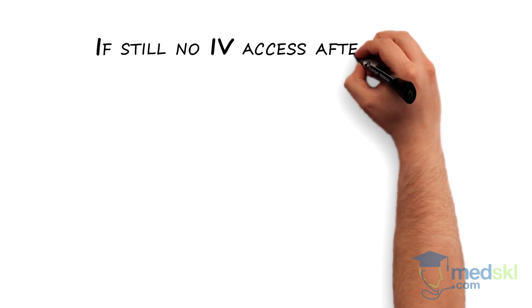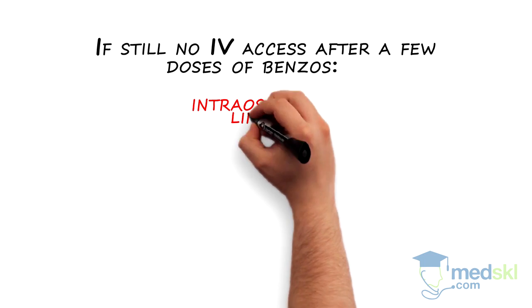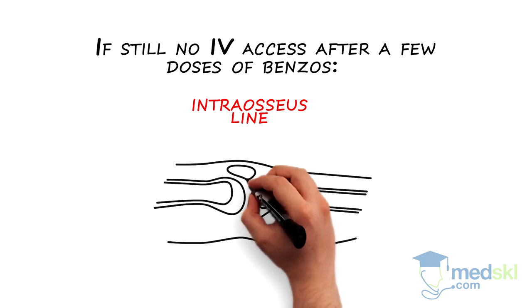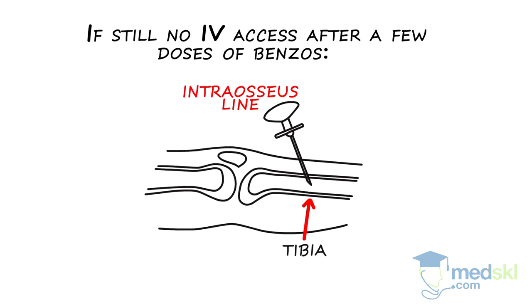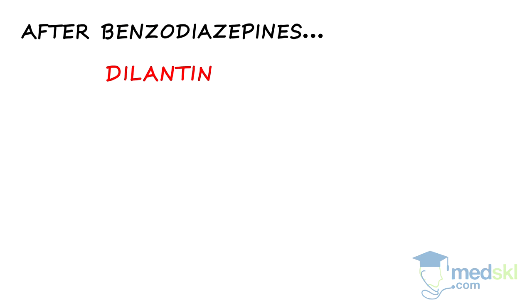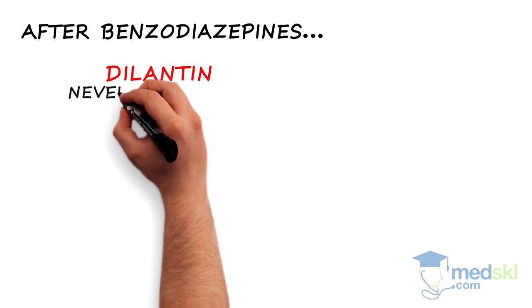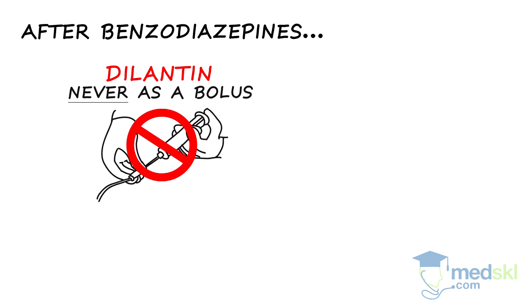If you do not have IV access after a few doses of benzos, then an intraosseous line — often placed in the tibia — should be inserted, as it allows quick penetration of additional drugs. After benzodiazepines, Dilantin or phenytoin should be administered as an infusion. Remember, never push Dilantin as a bolus, as it will cause life-threatening apnea, hypotension, and arrhythmias.